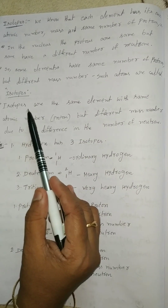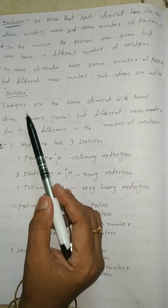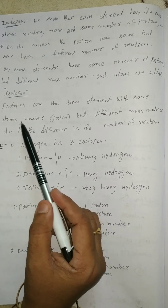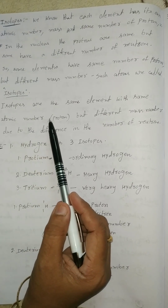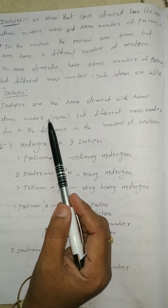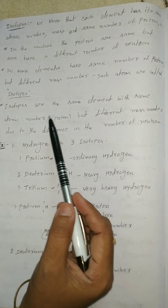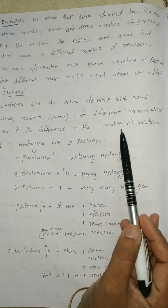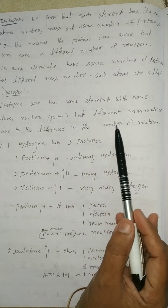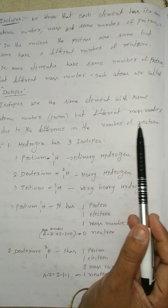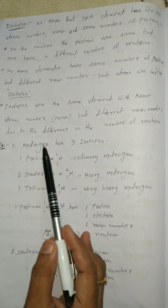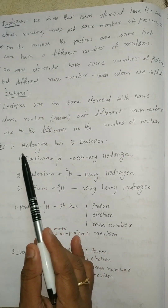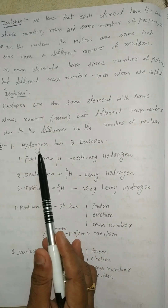Isotopes means same atomic number — same protons — but the difference is in the mass number, because of difference in the number of neutrons. For example, the first example is hydrogen.